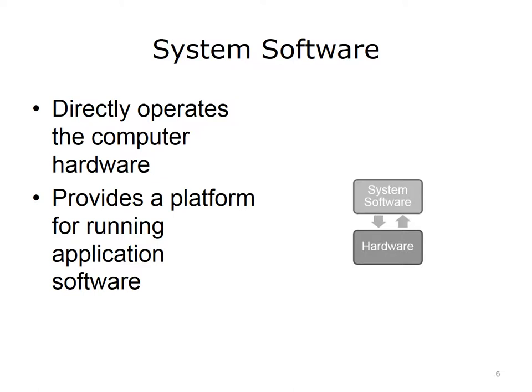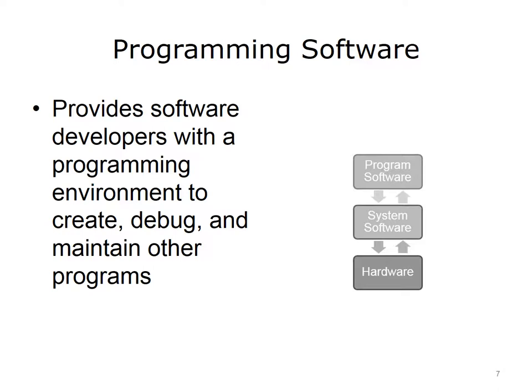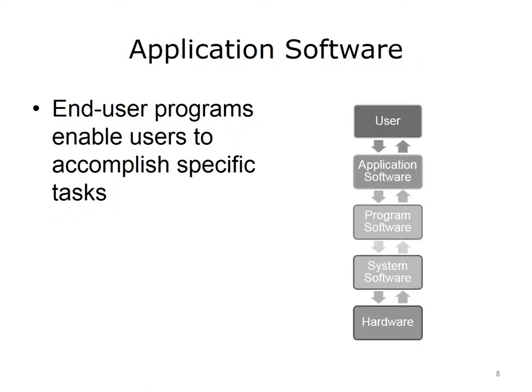System software interacts directly with the computer's hardware, making the computer run and serving as a layer between the application software and the hardware. System software makes sure that the hardware does everything the applications want it to do, and helps coordinate the tasks that all the running programs need it to do. Programming software provides software developers with a programming environment, which they use to create other programs. Application software offers computer users productivity, entertainment and communication tools.